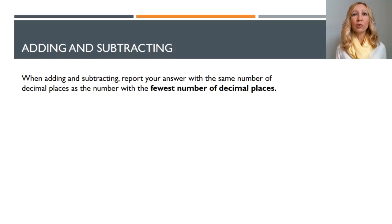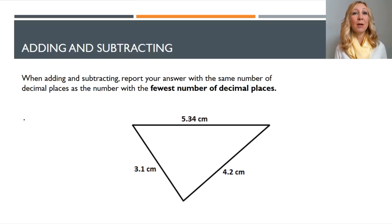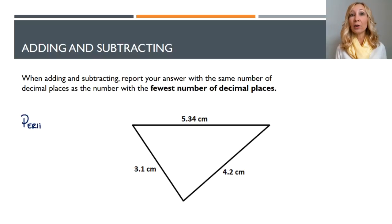Now, there are two rules. One rule is for adding and subtracting, and the other rule is for multiplying and dividing. So if you're adding and subtracting, you should report your answer with the same number of decimal places as the number in your math with the fewest number of decimal places.